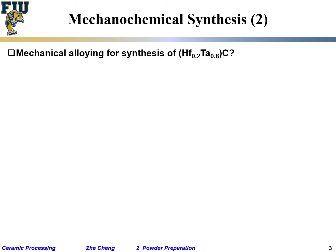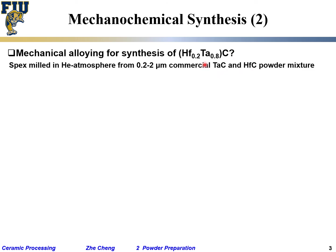Let me continue with another mechanochemical alloy synthesis example. We now try to make a metal carbide: (Hf₀.₂Ta₀.₈)C — a hafnium-tantalum carbide. One group of researchers started not from metals and carbon, but from pure tantalum carbide (TaC) and pure hafnium carbide (HfC). The initial equation written is not balanced.